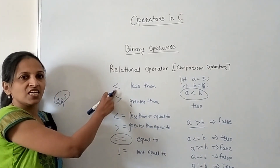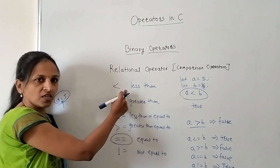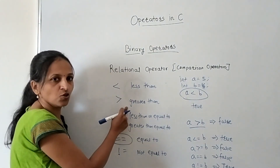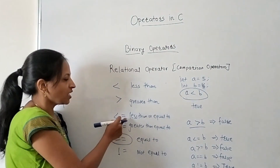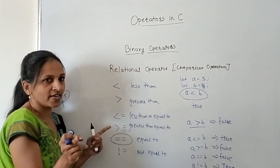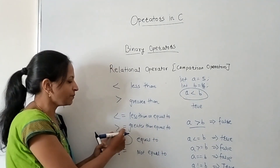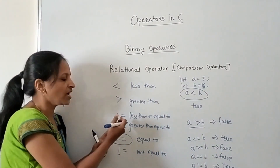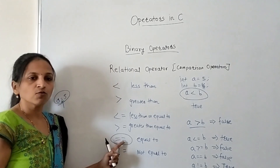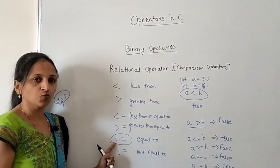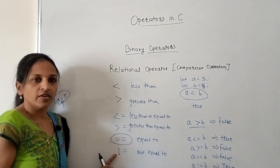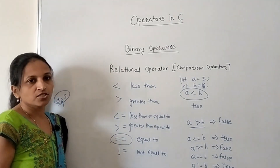To summarize relational operators: less than (<) returns true if left operand is less; greater than (>) returns true if left is greater; less than or equal (<=) returns true if left is less than or equal; greater than or equal (>=) returns true if left is greater than or equal; equal to (==) returns true if both are equal; not equal to (!=) returns true if both are different.